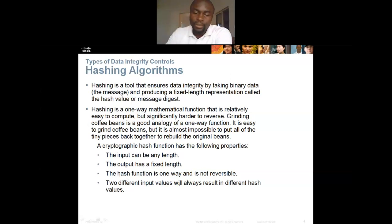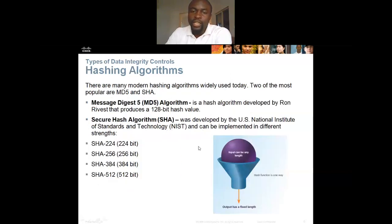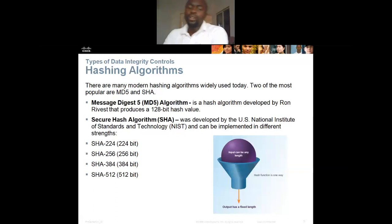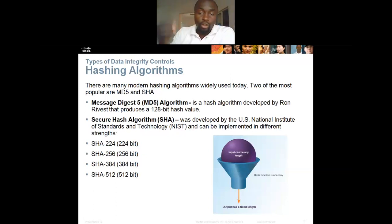Two different input values will always result in different hash outputs. There are many widely used data hashing algorithms, one of which is called the MD5 algorithm, or Message Digest 5. This is a very common algorithm used in most network devices. The MD5 hash algorithm produces a 128-bit output — the longer the bit length, the stronger the security.